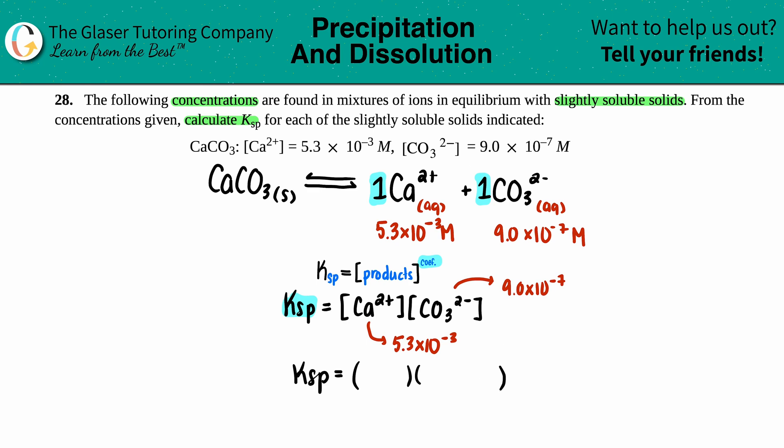Ksp equals the two of them multiplied together: 5.3×10⁻³ times 9.0×10⁻⁷. We will get our answer. It's as easy as that.